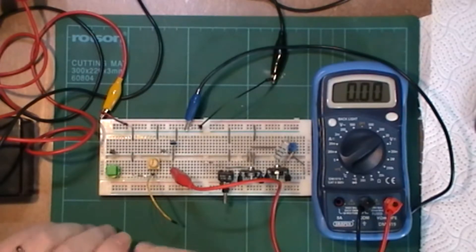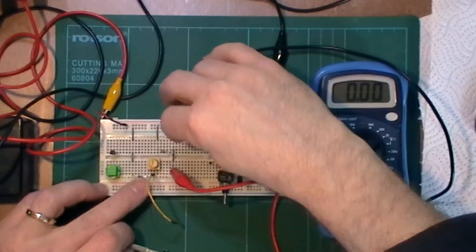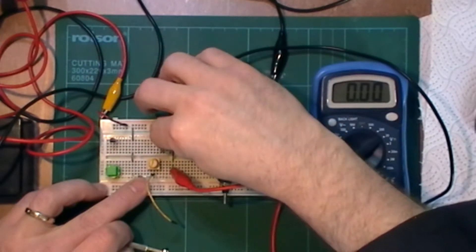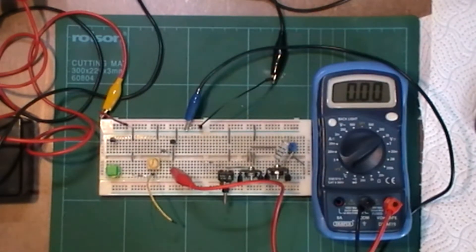So let's put the 5 volt one in which is the Fairchild one.